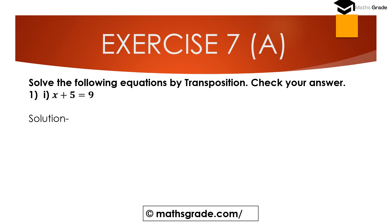Question number one: solve the following equation by transposition and check your answer. The first part is x plus 5 equal to 9. Here x is the variable, constants are 5 and 9, and the operation is addition. We have to solve this equation by the transposition method.